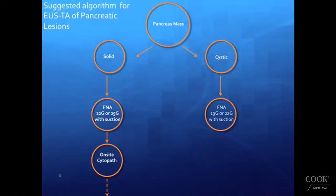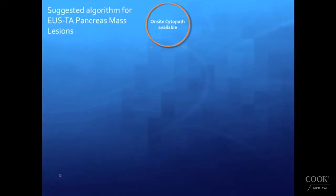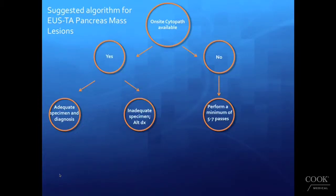With fine needle aspiration for pancreas masses, we suggest the use of an on-site cytopathologist where available. If on-site cytopathology is available, they will determine whether the specimen is adequate and provide the ultimate diagnosis. If on-site cytopathology is not available for assessment of pancreatic mass lesions, we recommend the endosonographer perform a minimum of five to seven passes based on previous data.